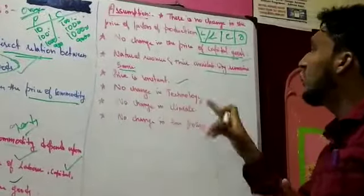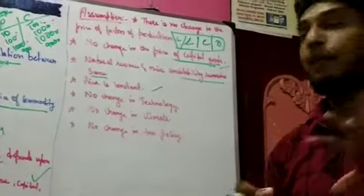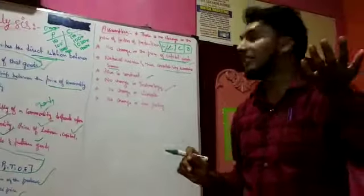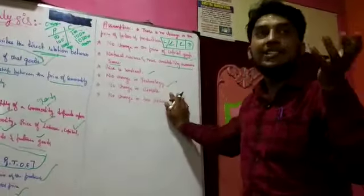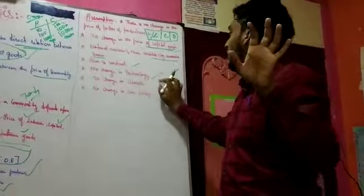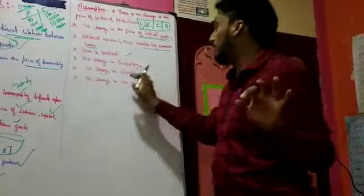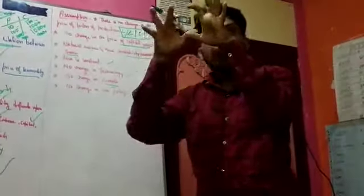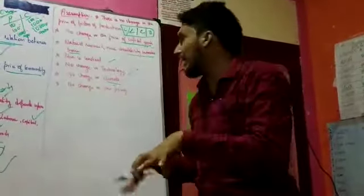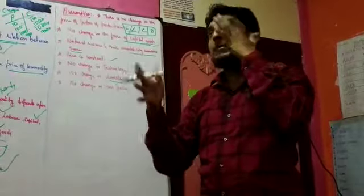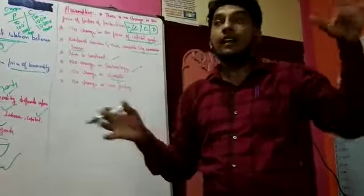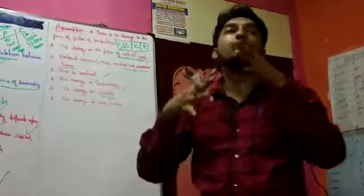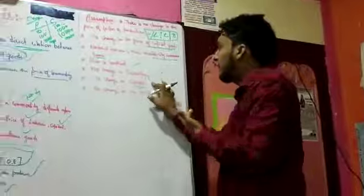Next assumption: no change in technology. In the law of supply, the technology will also remain the same, because if there is a change in technology, the innovative ideas will have impact and it will not turn into a good aspect. Also, no change in the climate — there is no change in the climate aspect of the business, how the work is done, the brotherhood in the company, how activities are carried out — all these aspects will not be changed.